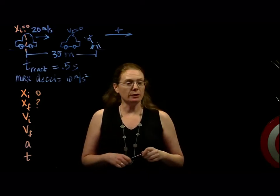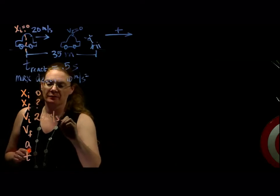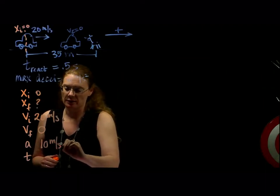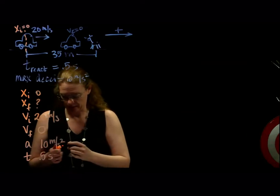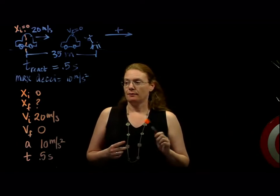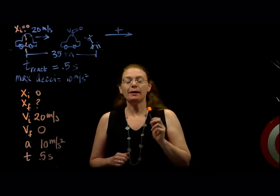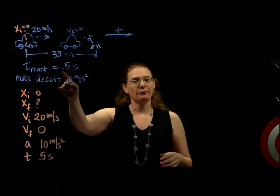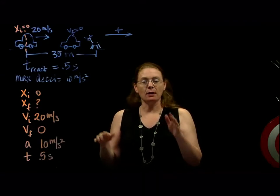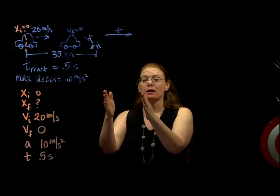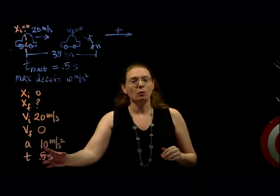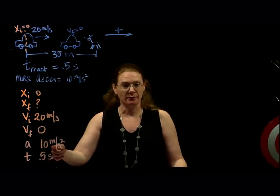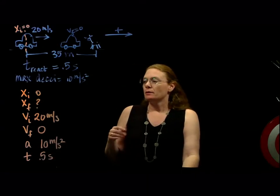V-initial — we know we start off at 20 meters per second. V-final is zero. Our maximum deceleration is 10 meters per second squared, and you might dump in that half a second there. But if you do this, you will not get the right answer, because there are actually two pieces of information or two times that we're interested in. We have a reaction time of half a second before we hit the brake, which means we're moving at 20 meters per second for half a second before we start to slow down. We're moving at constant speed for that half a second, so we can't have an acceleration — constant speed means no acceleration.